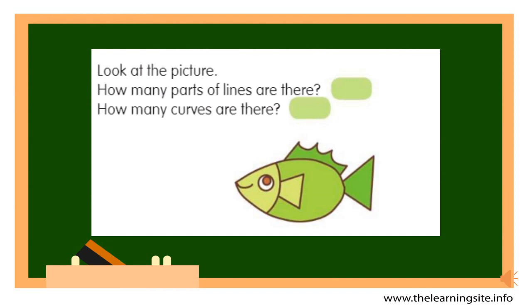Here is an example of a shape that is made of parts of lines and curves. Look at this fish. Look carefully at the fins and at the curves of the fish. How many parts of lines can you see? I can see eight straight parts and nine curves. Did you find all of them?